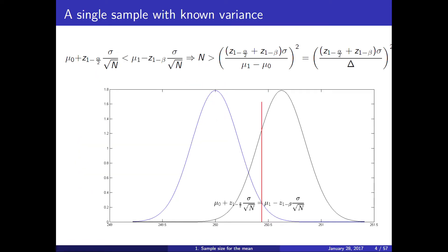This is the same case that we already analyzed in the previous lecture — the example of the machine producing tablets that had to put 250 milligrams per tablet. We want to know how many samples we need to detect changes of 0.5 milligrams. If the null hypothesis is true, this is the expected distribution of the sample means, and if the alternative is true, this distribution would be shifted to 250.5.